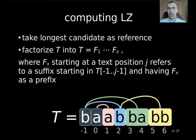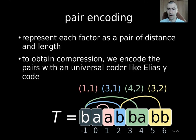Now what we can do is that we can represent such a z-parse by representing each factor as a pair of distance and length. This gives us these four pairs where the green pair represents this green factor and it has a distance of 1, 2, 3, 4 meaning that we copy from distance 4 two characters. We obtain compression by encoding the pairs with a universal coder like Elias Gamma code.